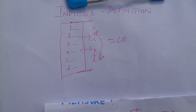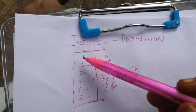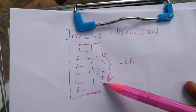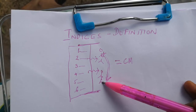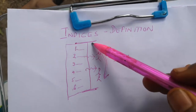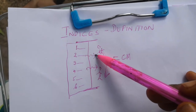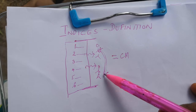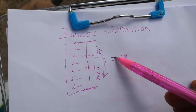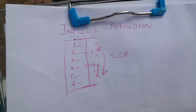Once again, looking at this picture: indices is defined as the numerical value describing the relative status of the population on the graduated scale with definite upper and lower limit, which is designed to permit and facilitate the comparison with other population classified under same criteria and methods. Thank you.